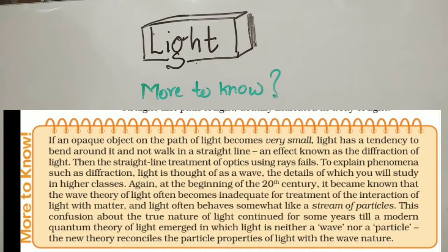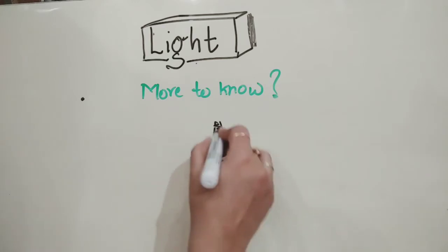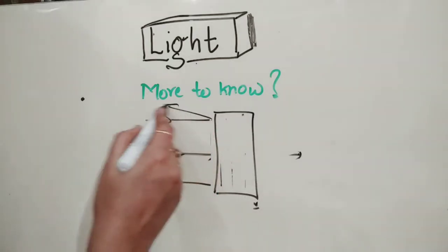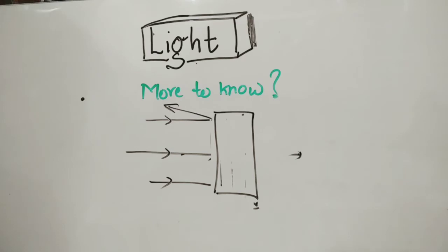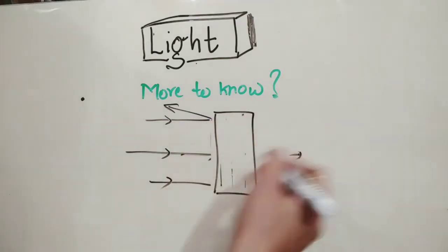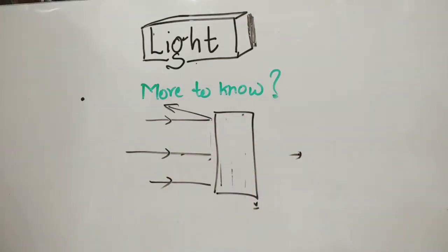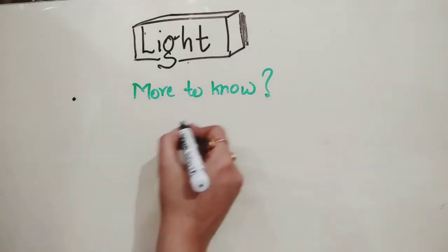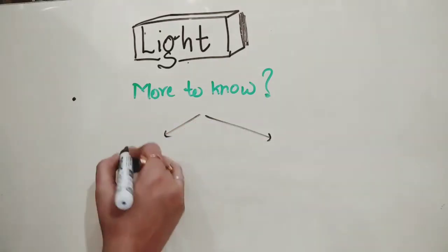In the NCERT, there is an orange box with a heading 'more to know.' In that box, some important information is given. The fact is that whenever there is an opaque object — an object which does not allow light to pass through it — then diffraction will take place, that is bending of light at the edges of that object. So, to understand how light travels, different theories are given.